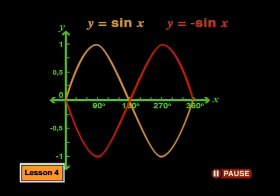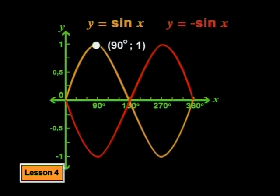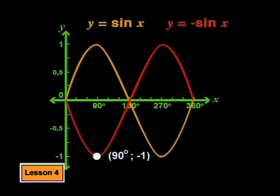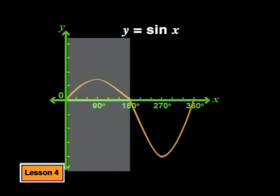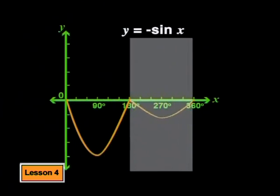Comparing the parent graph to the new graph, we can describe this change as a reflection of the parent graph about the x-axis. Each point on the parent graph has been reflected to make up the new graph. For example, the point (90, 1) is reflected to (90, -1). The positive part of the parent graph is reflected over the x-axis to form the negative part of the new graph, and the negative part is reflected to form the positive part.